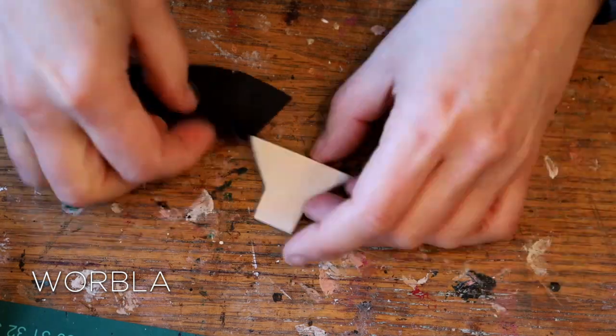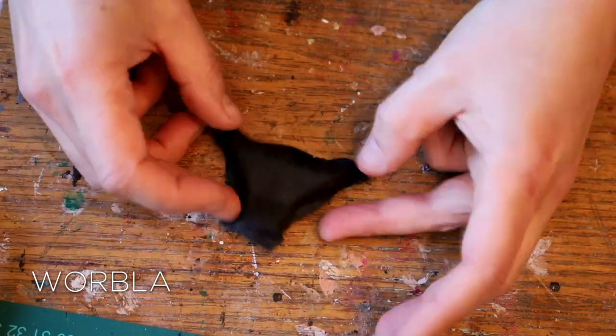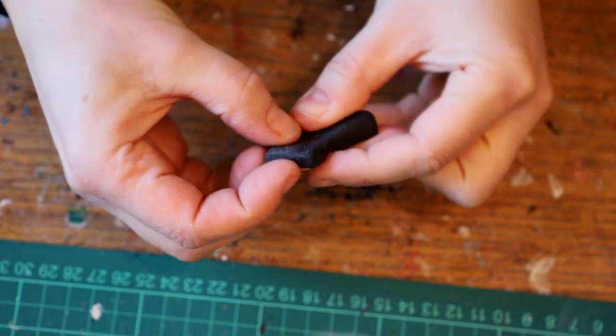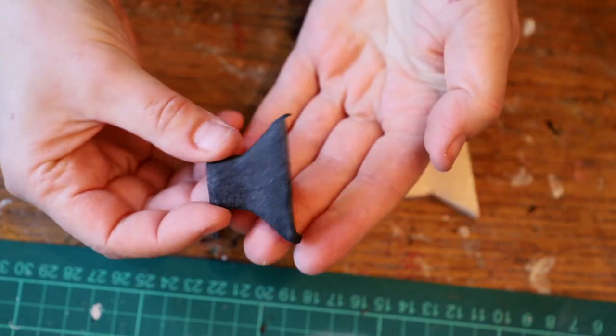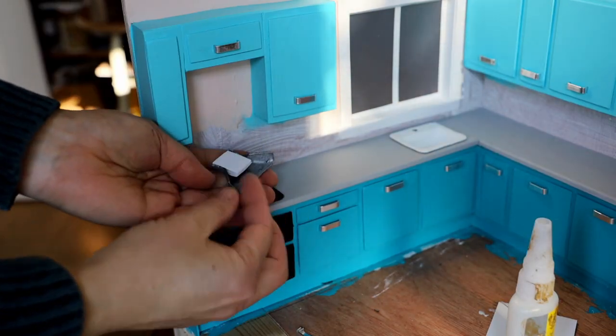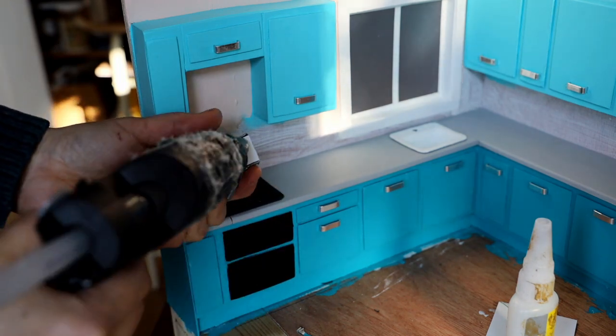And then used a piece of Worbla that I warmed up and shaped around my balsa wood. I cut the excess and then once it was cold I took it out of the balsa wood. I've added a bit of aluminum paint to it. I've also glued some foam at the back so I've got something to attach it to the wall.